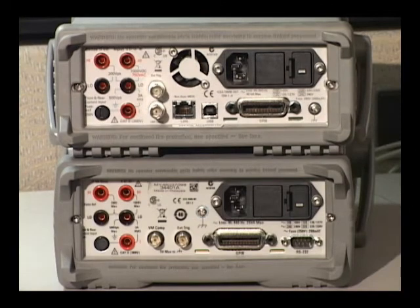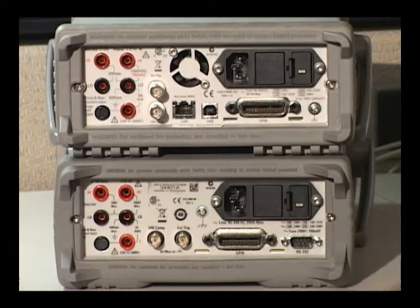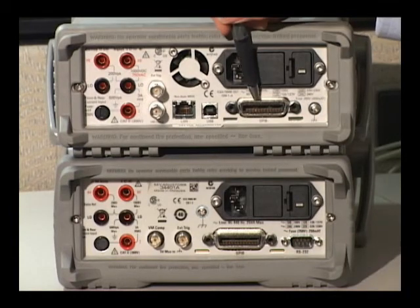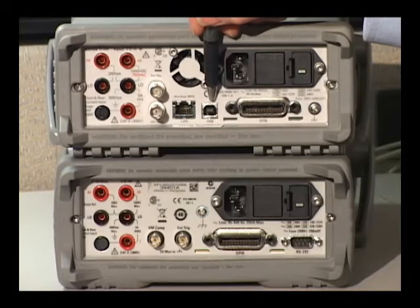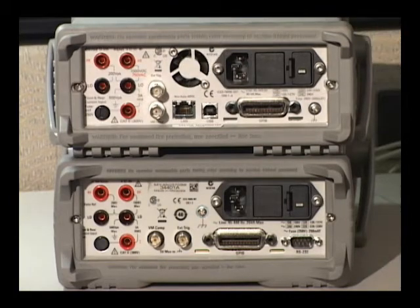Looking at the back, you can see the improvements we made to connectivity as well, where the 34401A had GPIB and RS-232. The 34401A keeps legacy GPIB but has added USB and LAN. In fact, this is an LXI compliant instrument.